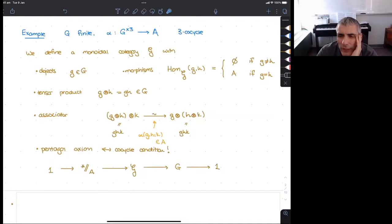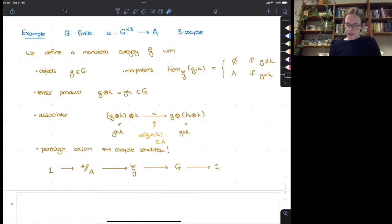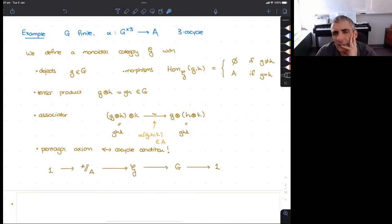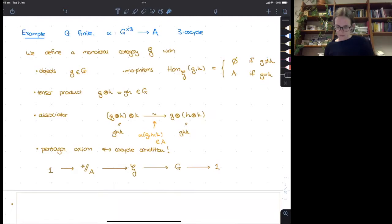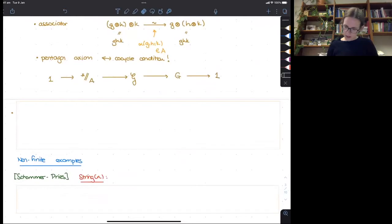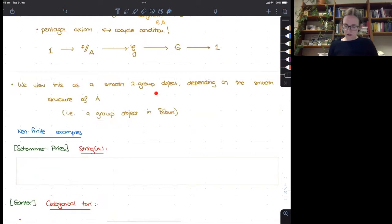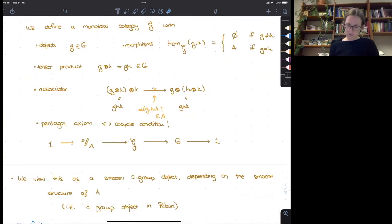Can I ask, is this some kind of way to refer to a central extension of the group by A? No, it's something else. Central extensions of G by A are classified by 2-cocycles. We've gone up one categorical level. That means our A is no longer the objects, it's the morphisms. This guy is a category, it's not really a group. And so now we want to go to the case that A is a torus perhaps. So we can view it as a smooth object.